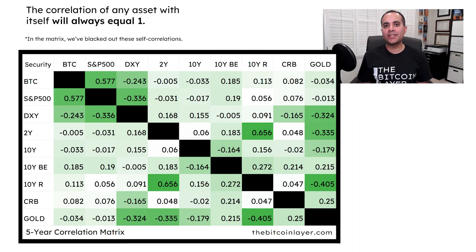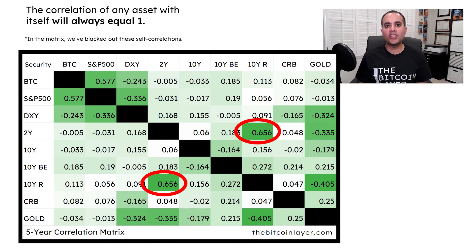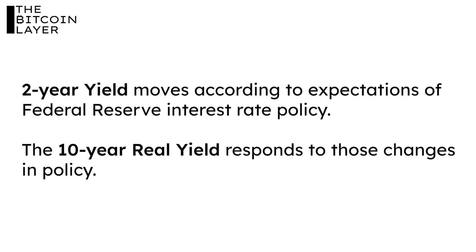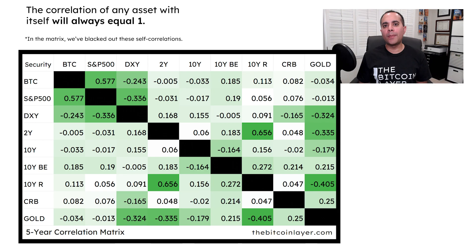Looking at these correlations, the strongest correlation between any two assets over the last five years in this universe are the 10-year real yield and the two-year nominal yield. The two-year yield moves according to Federal Reserve expectations of interest rate policy, and the 10-year real yield responds to those changes in policy. We'll break down more about real yields in another video, but for today the second strongest correlated pair is Bitcoin and the S&P 500 — meaning the relationship between Bitcoin and stocks is one of the strongest across all assets within global macro.